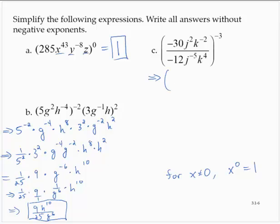Negative 30 over negative 12, well, a negative over a negative is positive. 30 over 12, I can reduce by 6 to 5 over 2. So I have 5 halves. I would have j to the 2 minus negative 5. That's j to the 7th. And I would have k to the negative 2 minus 4. So that's negative 6. And that's raised to the negative 3rd.